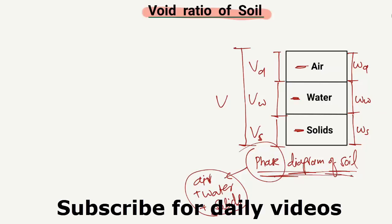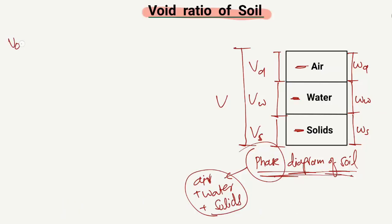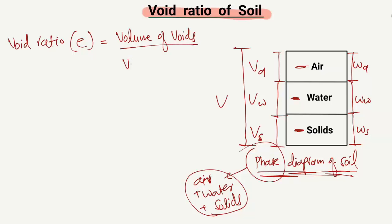Now, how can we define the void ratio of the soil sample from the phase diagram? The void ratio is basically represented by small e, and it is equal to the volume of voids divided by the volume of solids.